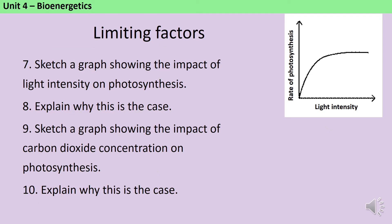Your graph for question seven should look like this. In the early part of the graph towards the bottom left, light is the limiting factor and therefore as you increase light you increase the rate of photosynthesis. However, as you give more and more light, eventually light stops being the limiting factor, and either carbon dioxide or temperature will be limiting instead. So the graph plateaus because it doesn't matter how much more light you give, there's already enough light.